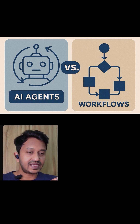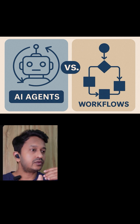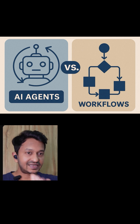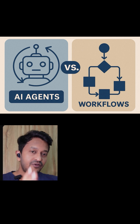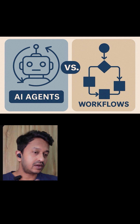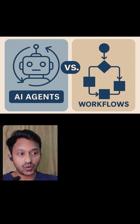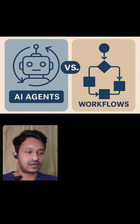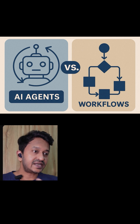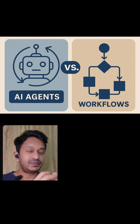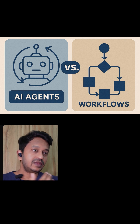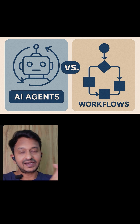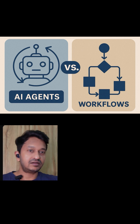AI agents are like 'achieve this goal, figure out how by yourself' — autonomous problem solving. They're perfect for complex tasks that need adaptation, like researching a topic, planning a trip, or debugging code. All these things need extra reasoning and planning, so that's where AI agents come in handy. The agent decides what steps to take based on the situation. That's how workflows and AI agents are basically differentiated.